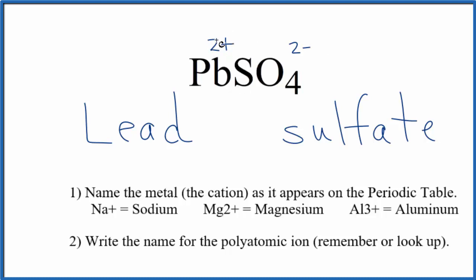So because we have the 2+ on the lead, and it's a transition metal, we're going to write a Roman numeral II between the lead and the sulfate. So the name for PbSO4 is lead(II) sulfate.